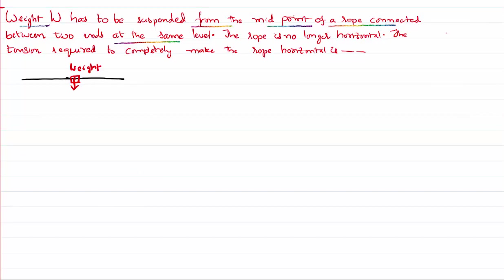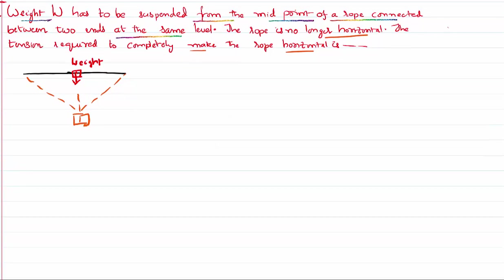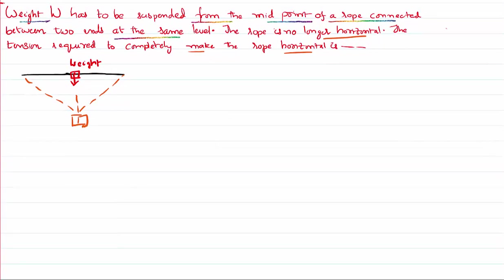It will change its shape from its existing shape to this shape. So that weight will be coming down shifting to this location. This is what he is saying in the question. The rope is no more horizontal absolutely. We need to know what is the tension required to make this string again horizontal. That's the problem.